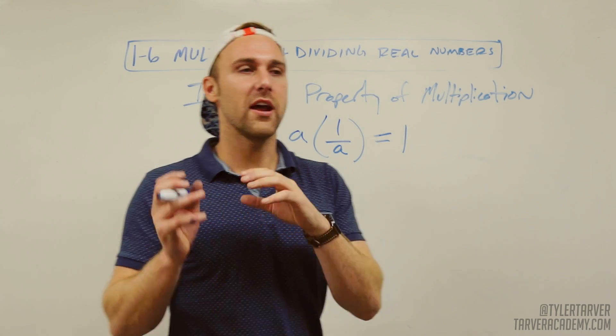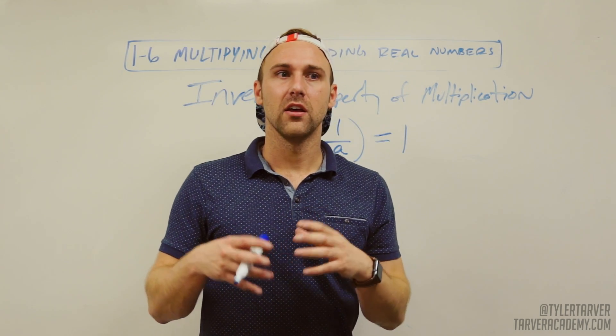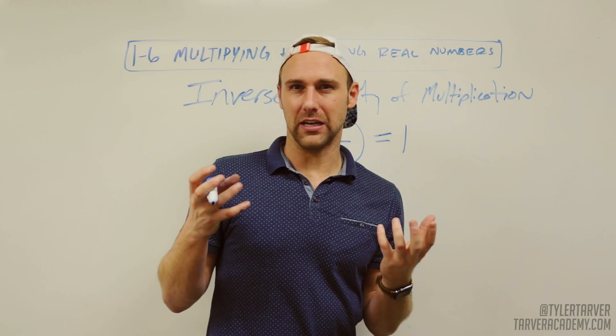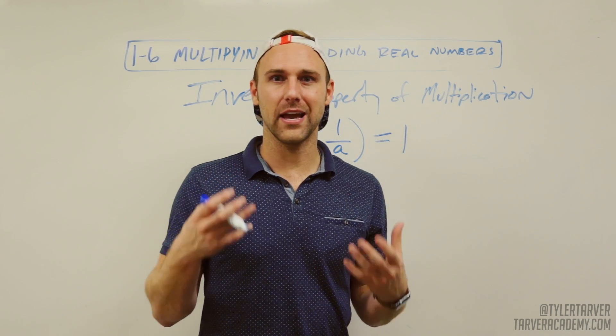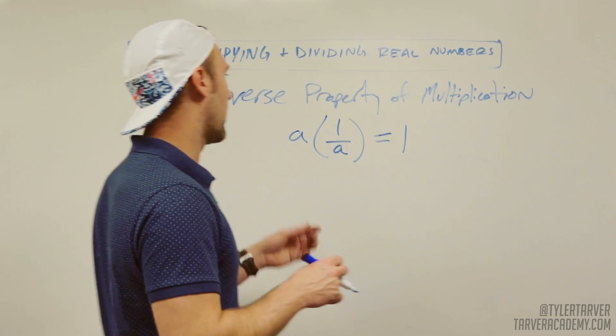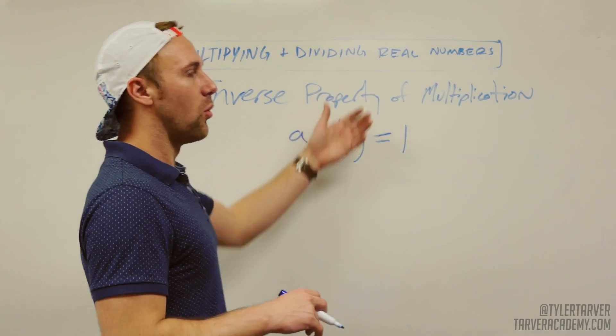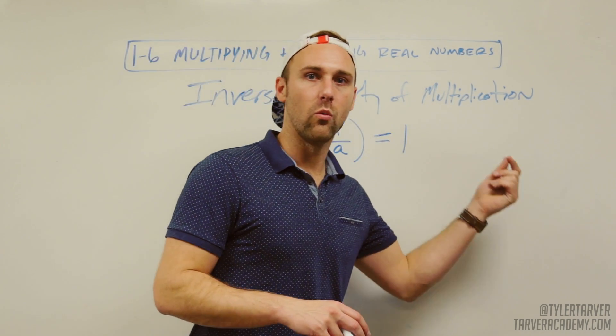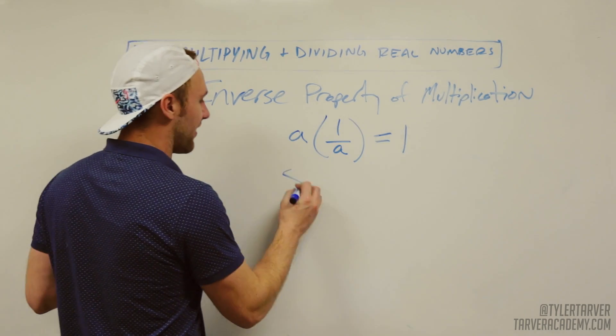It means that whenever you multiply something, there are two opposites of each other. That's not the right way to say it, but it's the simple way to say it. It's like a times one over a is going to equal one. What that means is, say you've got five.